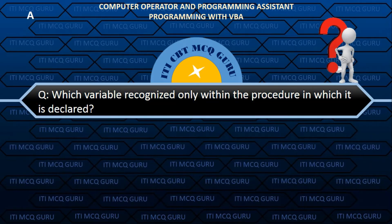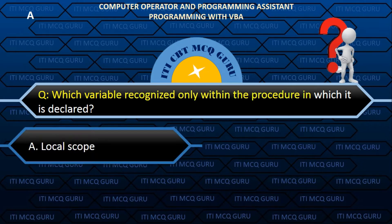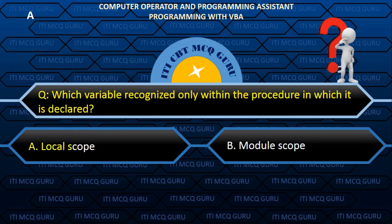Which variable is recognized only within the procedure in which it is declared? Answer: A. LOCAL SCOPE.